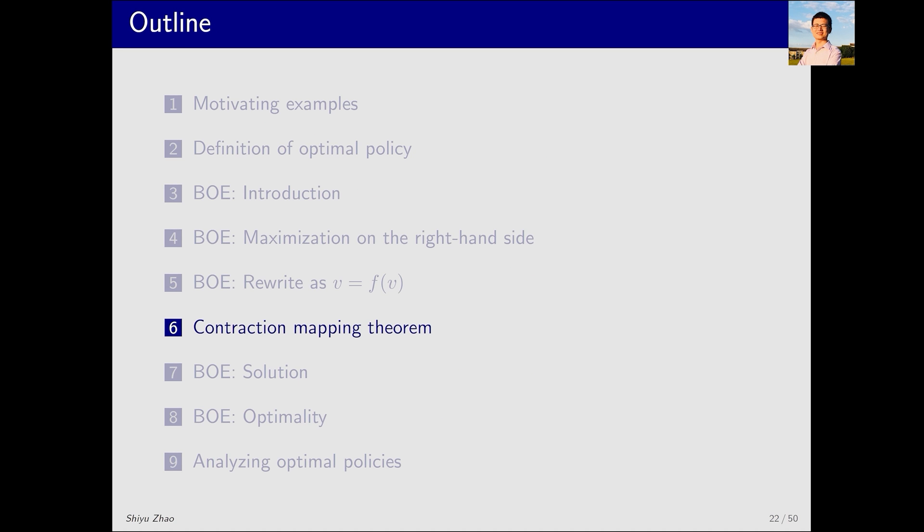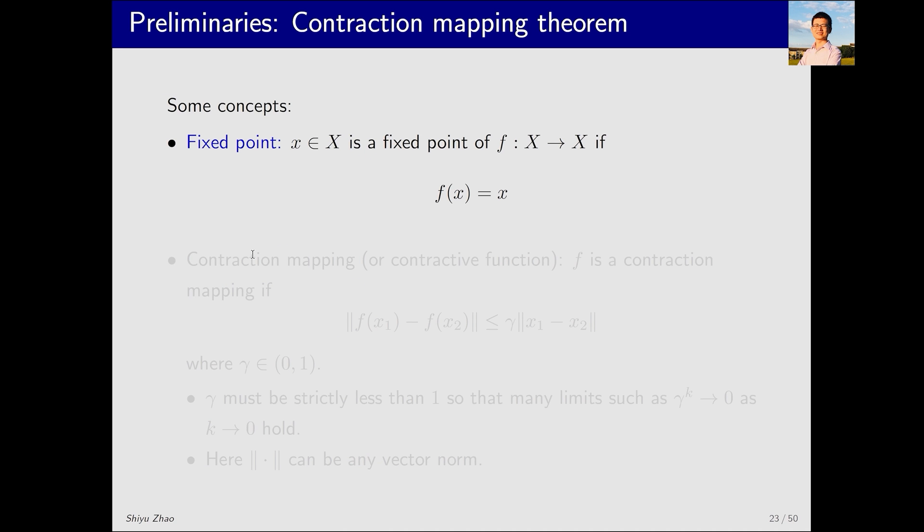To do that, we need to introduce a contraction mapping theorem. This theorem is very important. Let's first see a concept called fixed point. If there's a point x in a set X, and a mapping or function f, where x satisfies f(x) equals x, then x is called a fixed point.